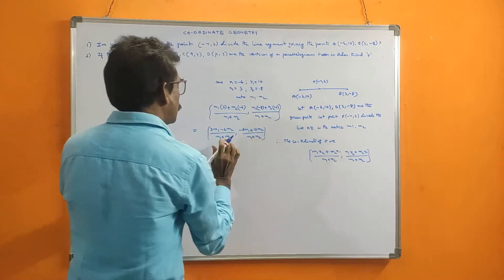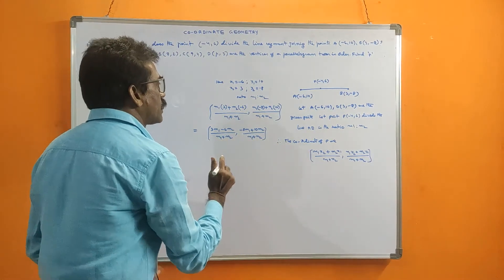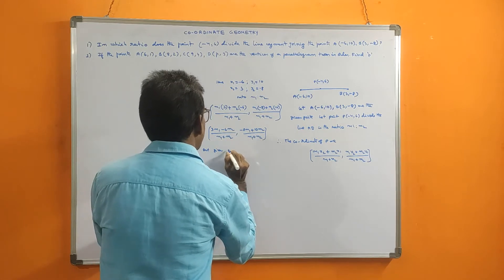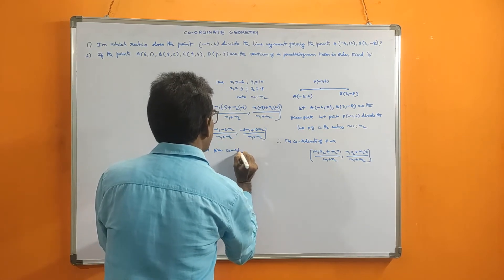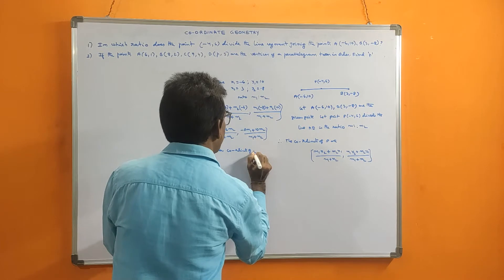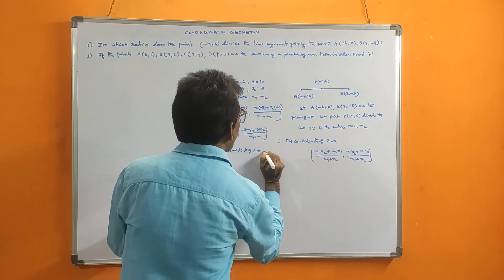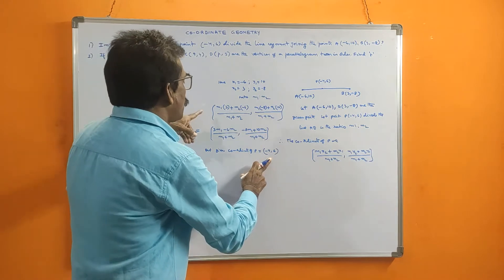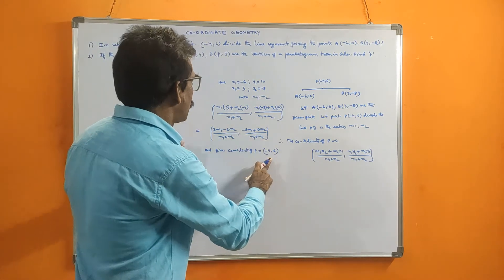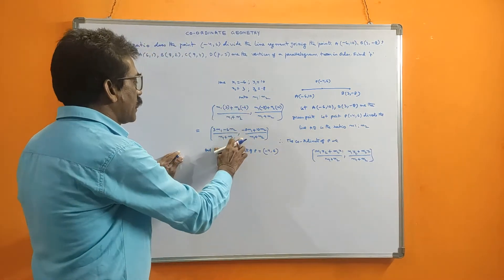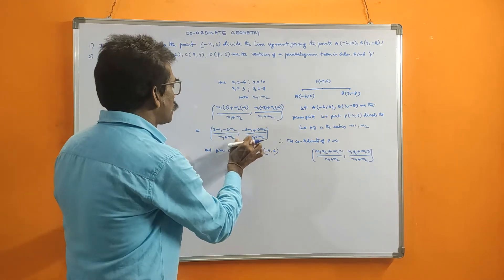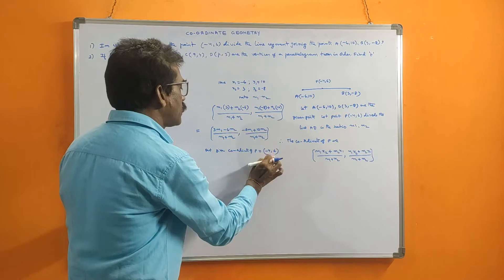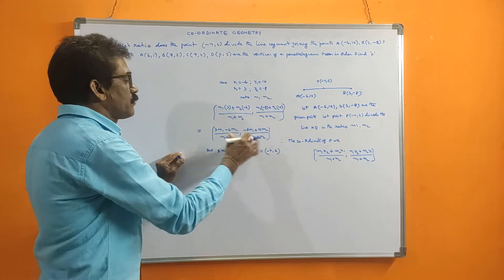This is the x-coordinate and this is the y-coordinate. But the given coordinates of P are equal to (-4, 6). So these are the P coordinates from the formula, and those are the given P coordinates — these two are equal. This is according to the formula; this is given. So these two being equal means the x-coordinate equals the x-coordinate and the y-coordinate equals the y-coordinate. By taking any one, we can solve.